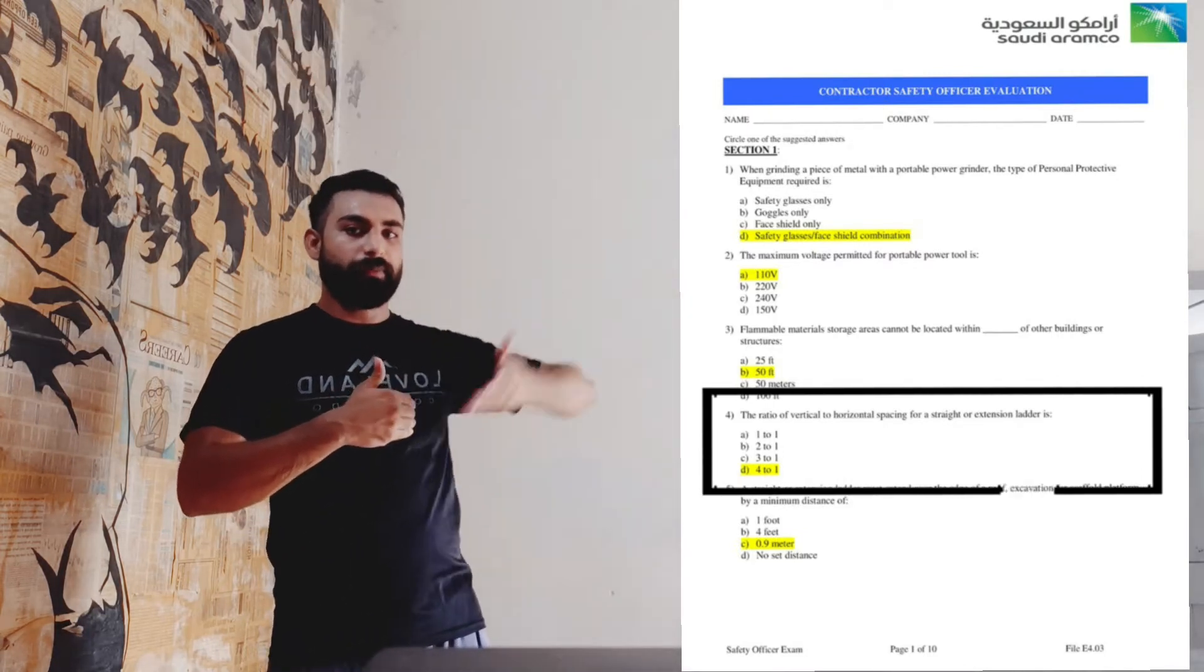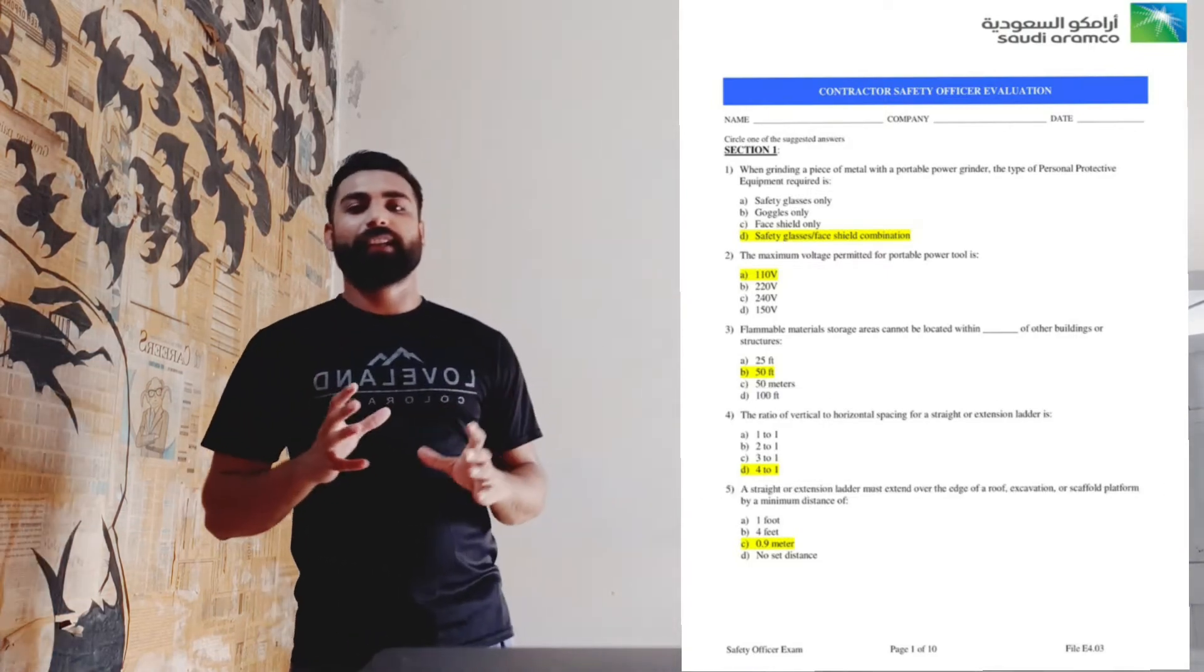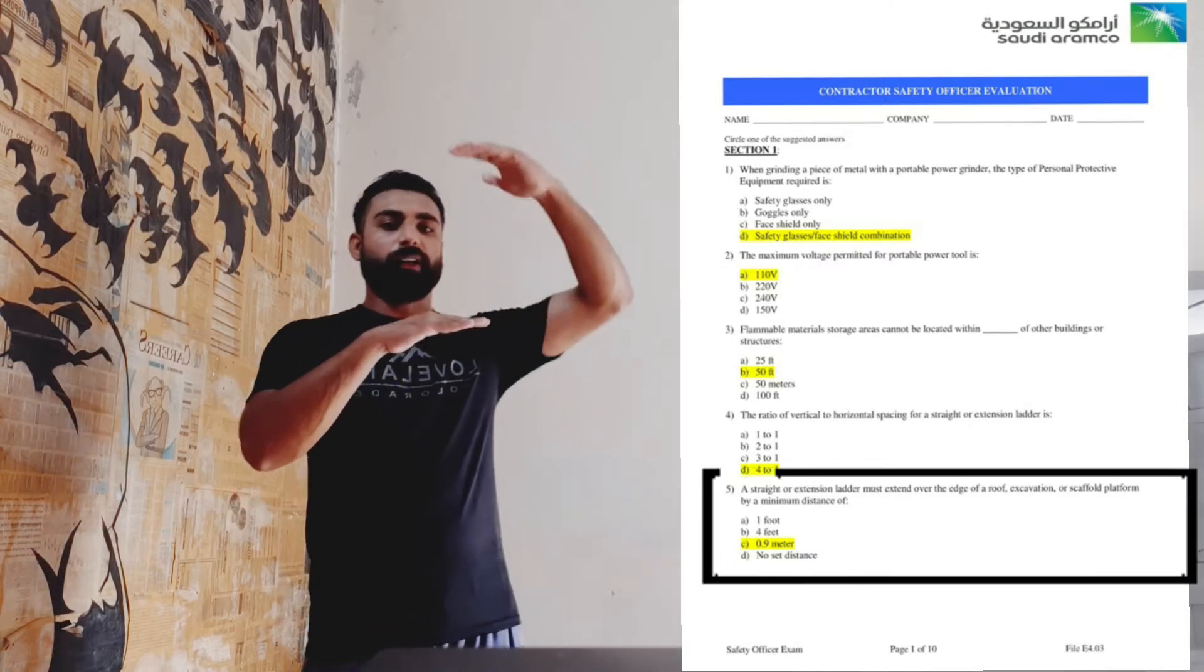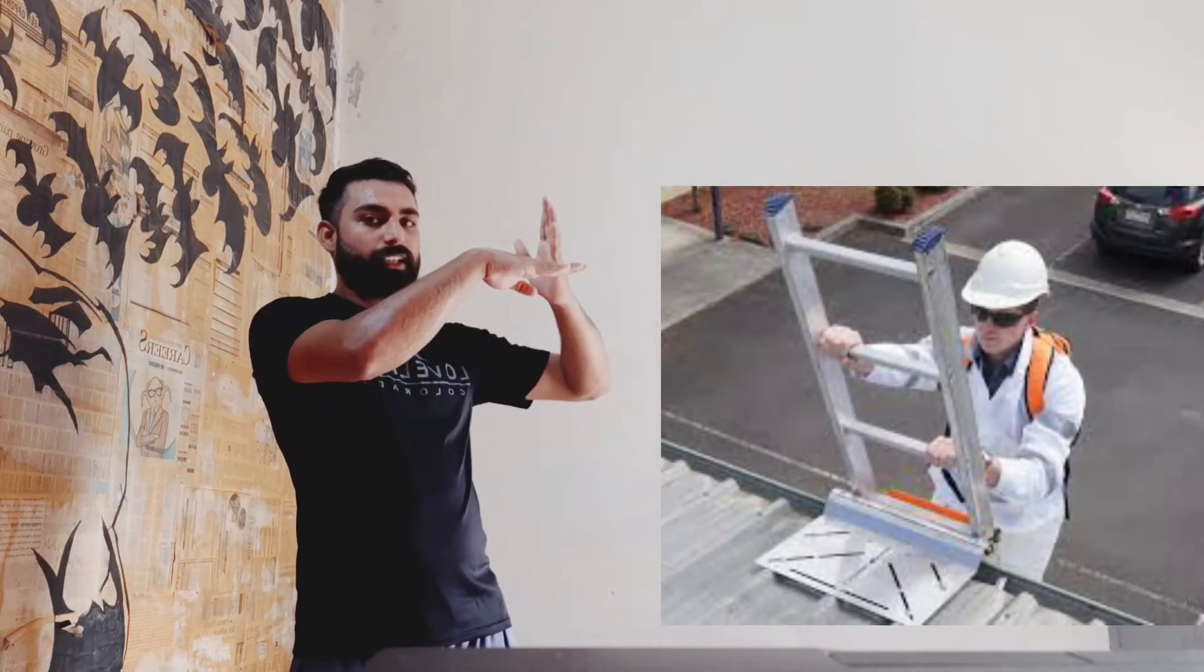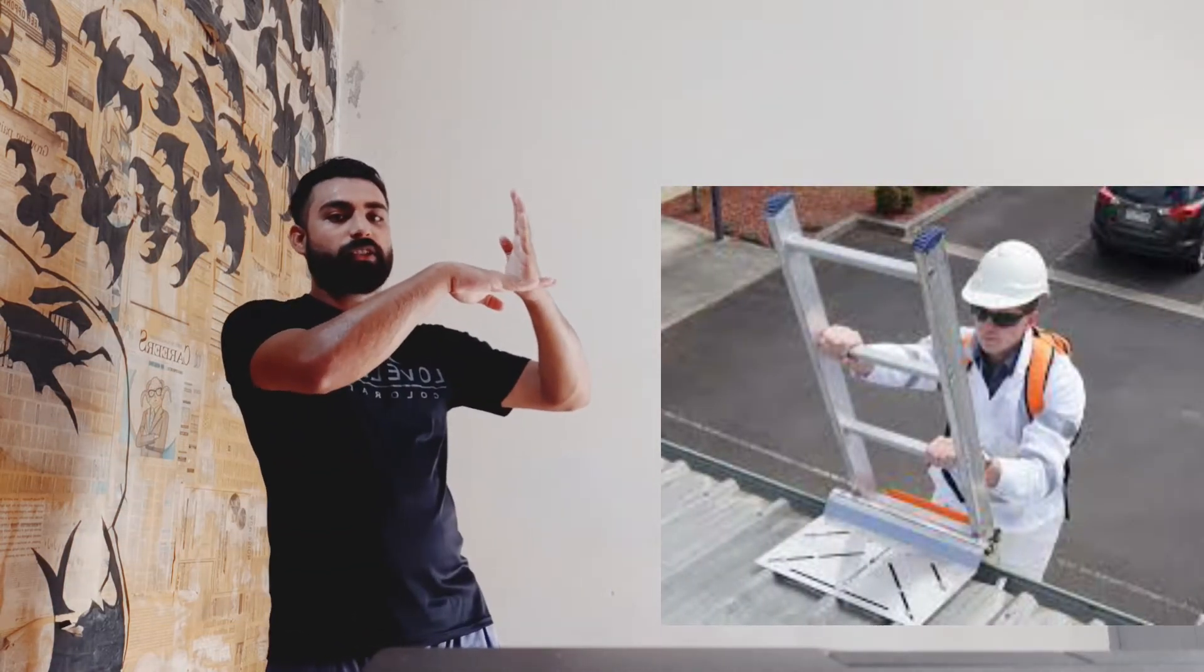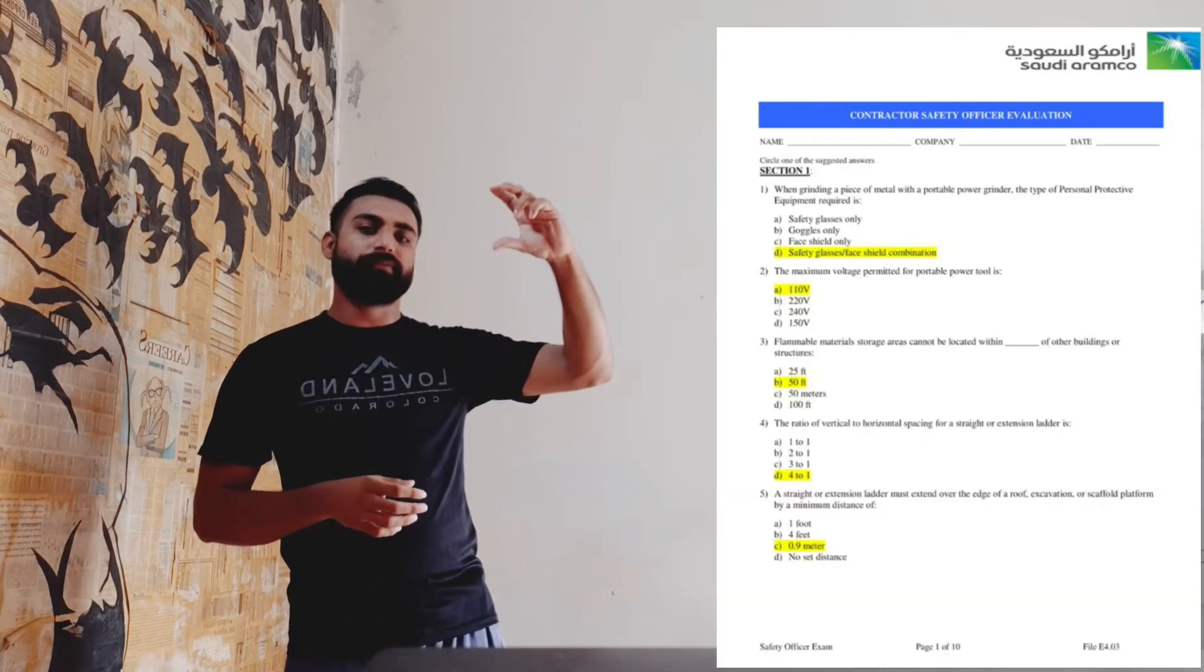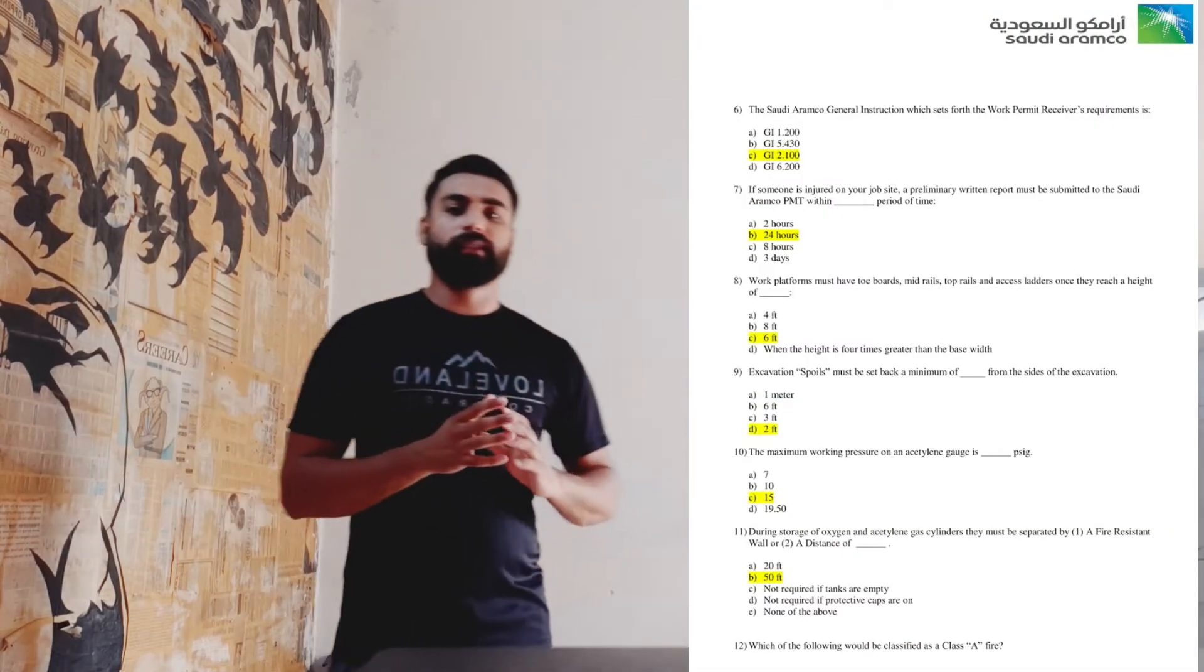Question number five again is regarding the ladder. Whenever we are placing a ladder somewhere, it should be above the roof. If this is the roof, it should be a little bit above. He is asking how much it should be above. It is 0.9 meters, or roughly you can say at least two rungs above the roof.